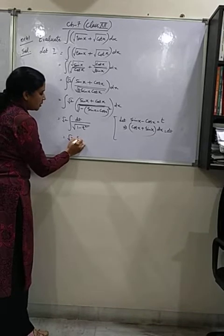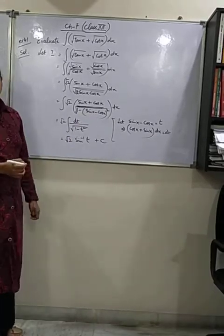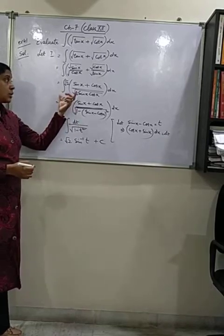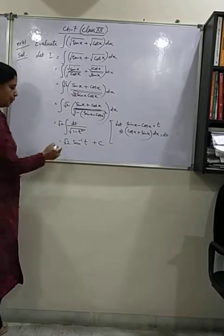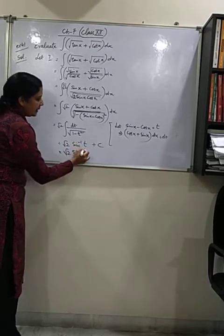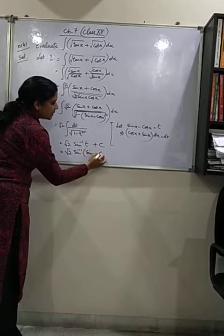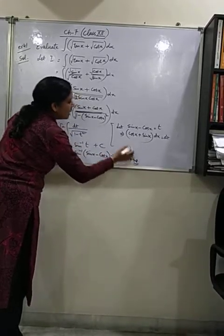The integration is quite simple as sin inverse t. And since we are working in an indefinite integral, we have to add the constant of integration also. Let's put back the value of t as sin x minus cos x. And that is your final answer.